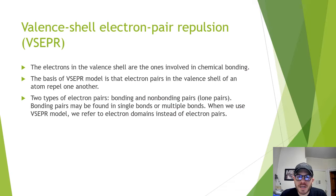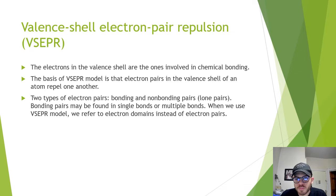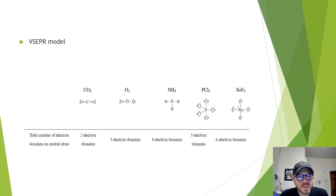Valence shell electron pair repulsion, or VSEPR, involves the electrons in the valence shell that are involved in chemical bonding. The basis of the VSEPR model is that electron pairs in the valence shell of an atom repel one another. There are two types of electron pairs: bonding pairs and non-bonding pairs, called lone pairs. Bonding pairs may be found in single bonds or multiple bonds. When we use the VSEPR model, we refer to electron domains instead of electron pairs.